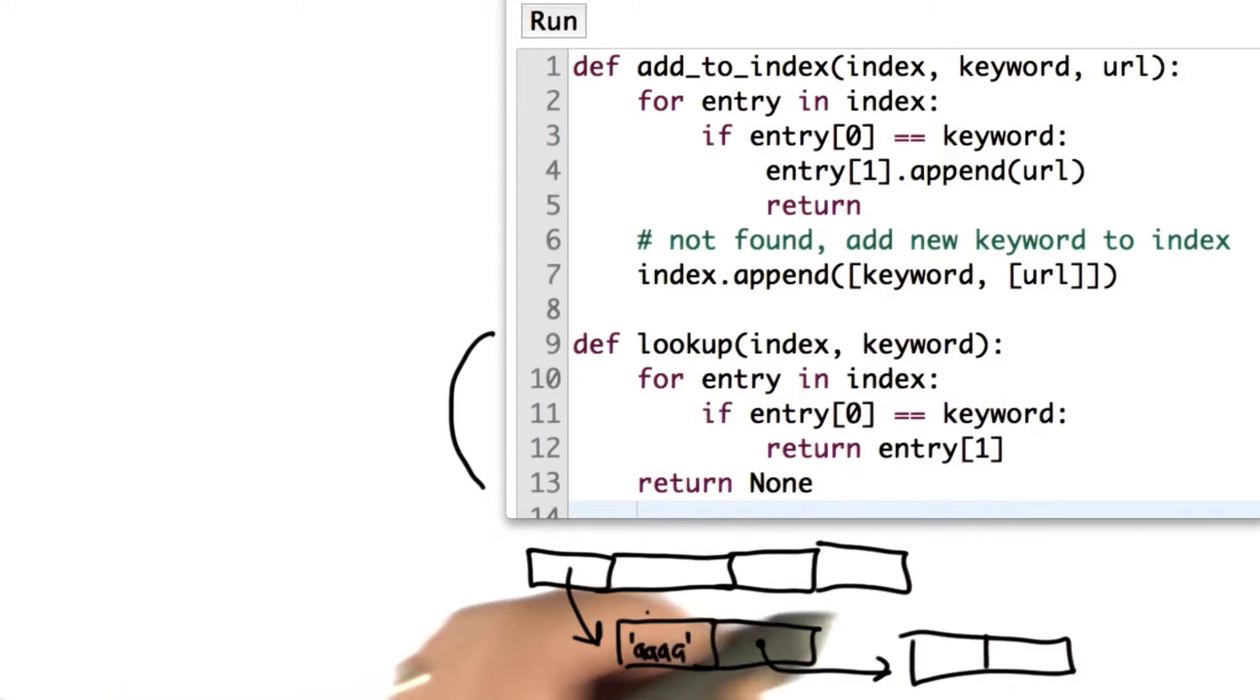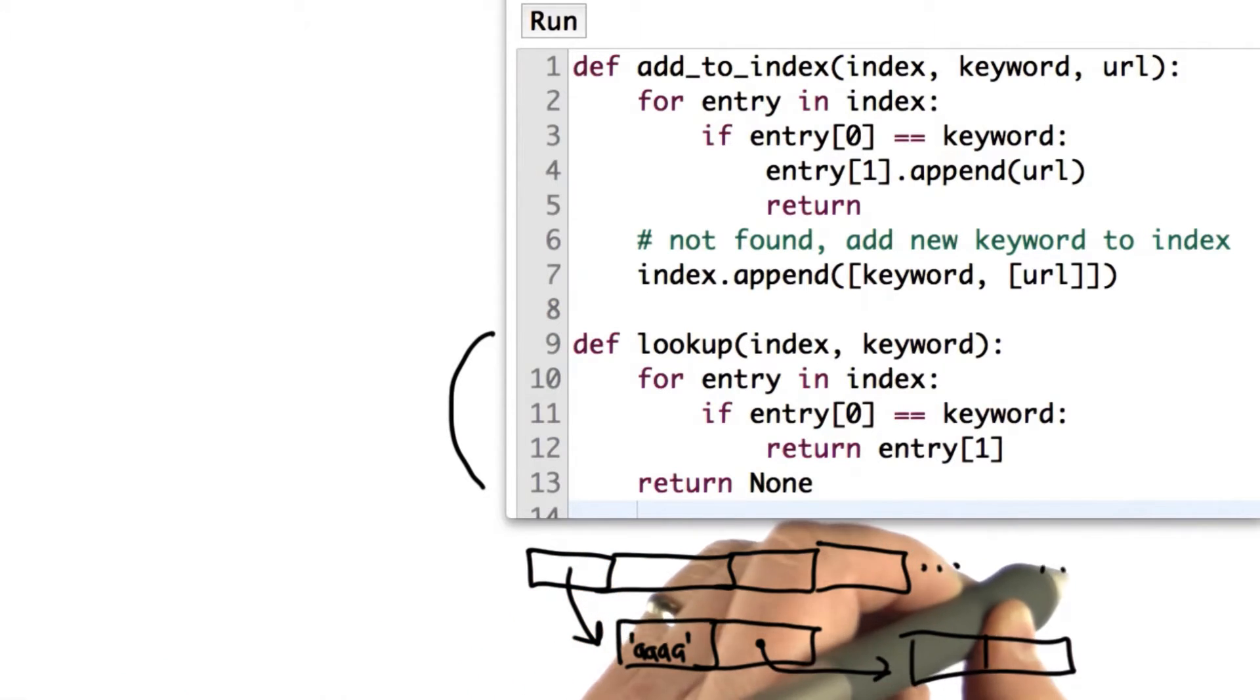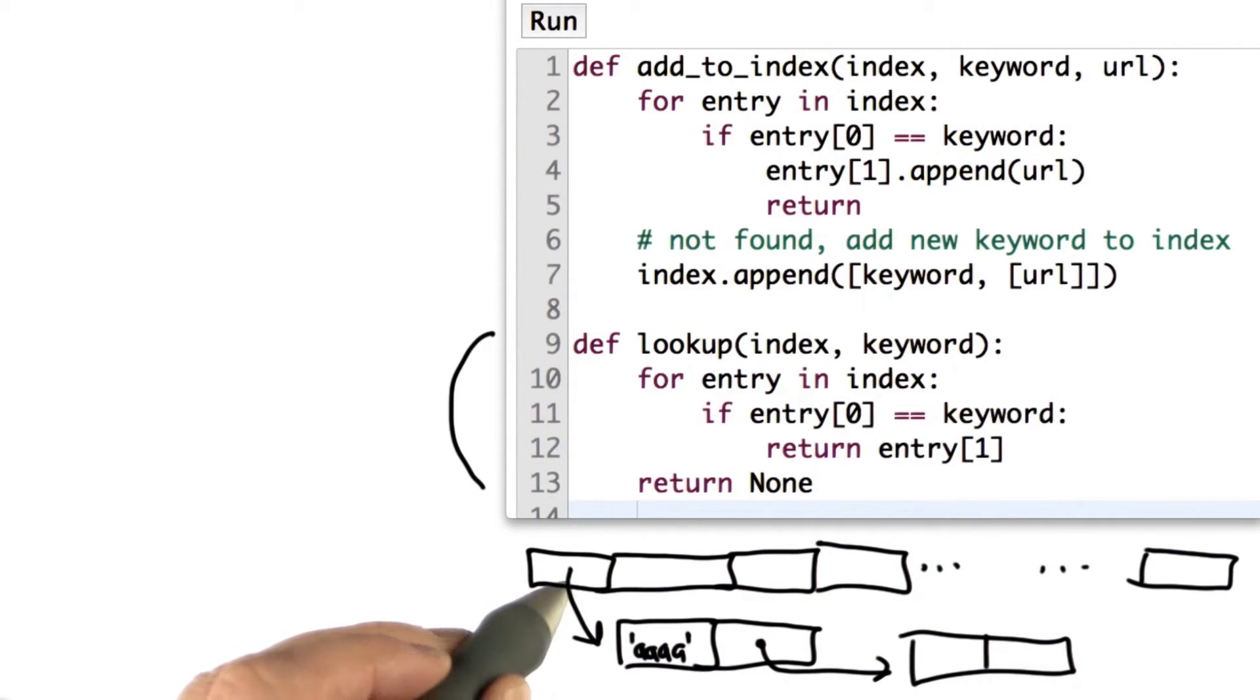So this is our index structure, right? It's a list of elements. If we had 10 million of them, it's a very long list with lots of elements. But each element is a list itself where we have the keyword followed by the list of URLs where it appears.